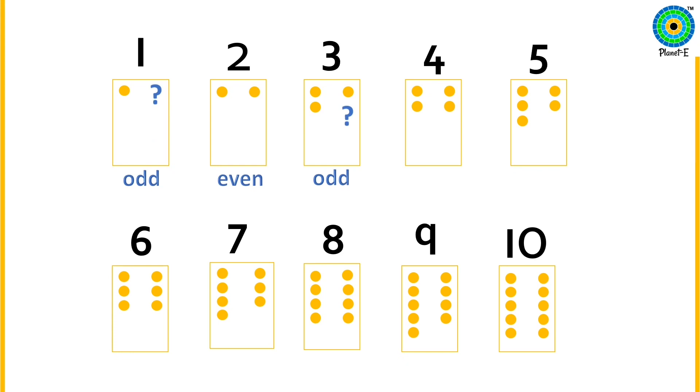Four, even number. Five. There is one dot which does not have a companion. Five is an odd number.